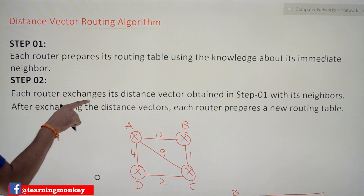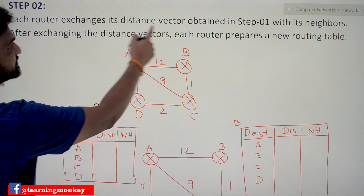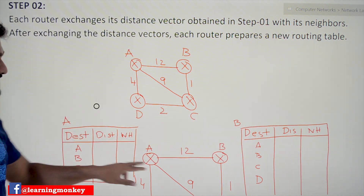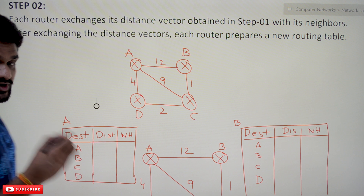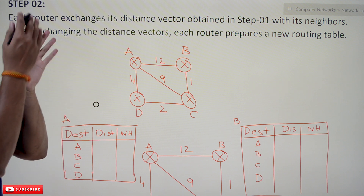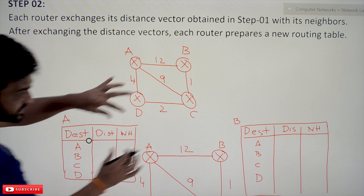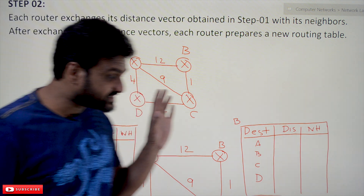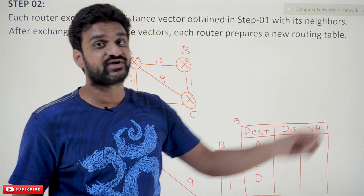In the second step, each router exchanges its distance vector obtained in the first step with its neighbors. These are the routing tables generated at each and every router. Distance vector means it is an array of distances. The distances obtained at each router — this distance vector — will be exchanged to its directly connected nodes. Because the distance vectors are exchanged and the routing tables are generated based on those distance vectors, it is called the distance vector routing algorithm.